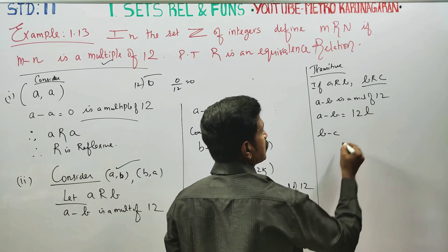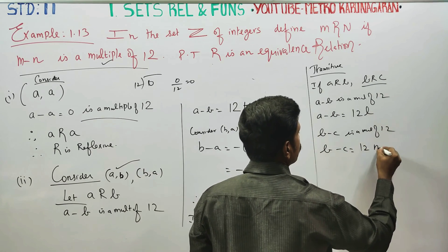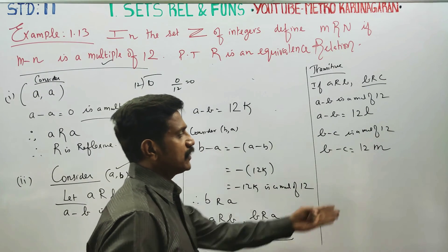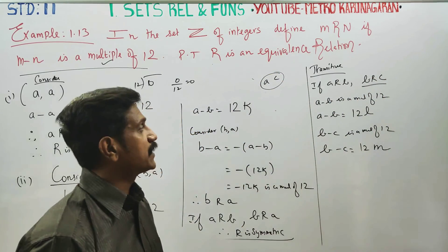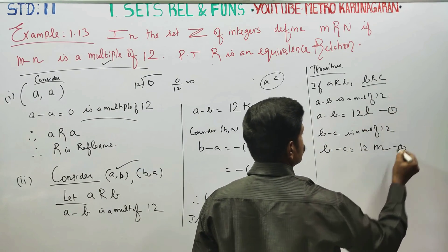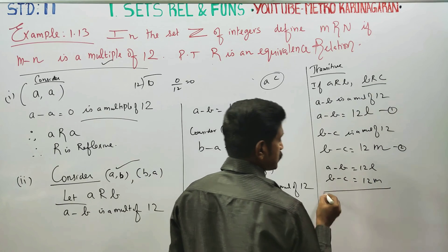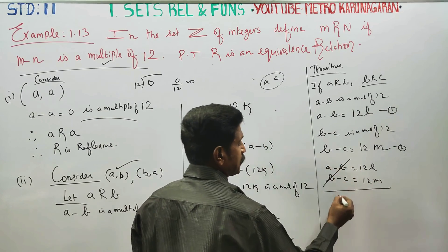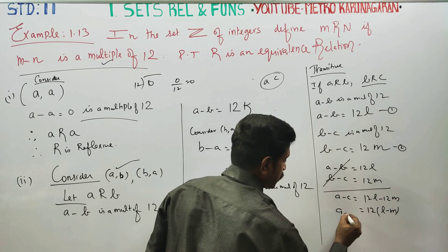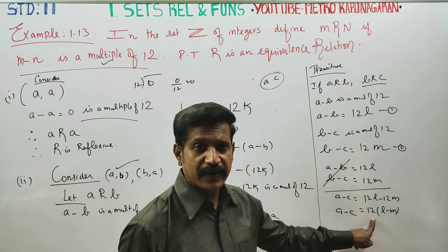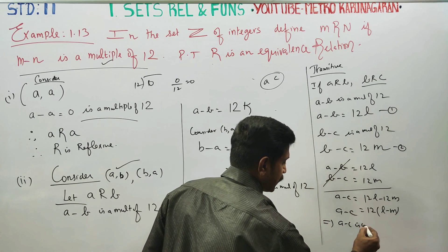If b is related to c, then b minus c is a multiple of 12, so b minus c equals 12M. Adding the two equations, b cancels: a minus c equals 12L plus 12M, which equals 12(L plus M). Therefore a minus c is a multiple of 12.